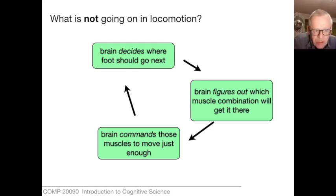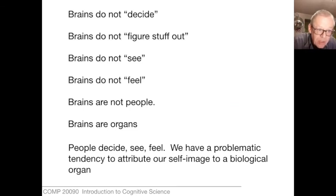Here's what's not going on in locomotion, although you will find stories like this in school textbooks: brain decides where the foot should go next, then the brain figures out which muscle combination will get it there, then the brain commands those muscles to move just enough, and then that cycle is repeated. That is absolutely not what is going on in locomotion. Look at those verbs: decides, figures out, and commands. Brains do not decide anything.